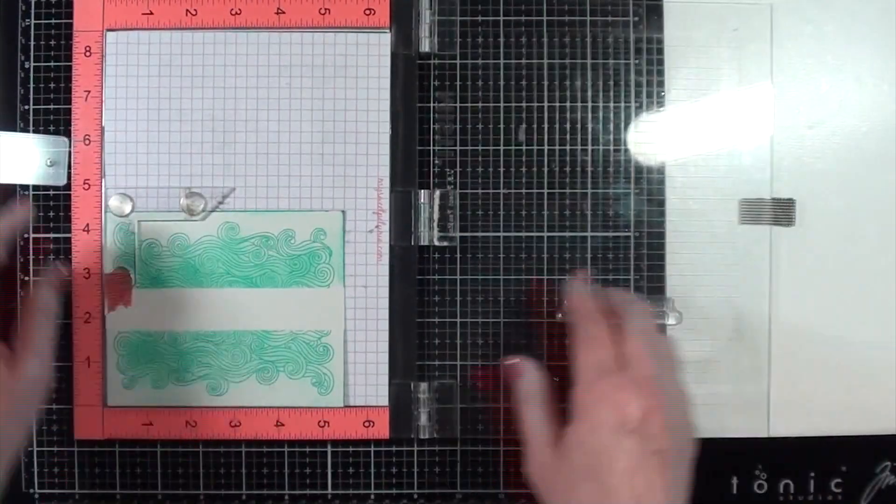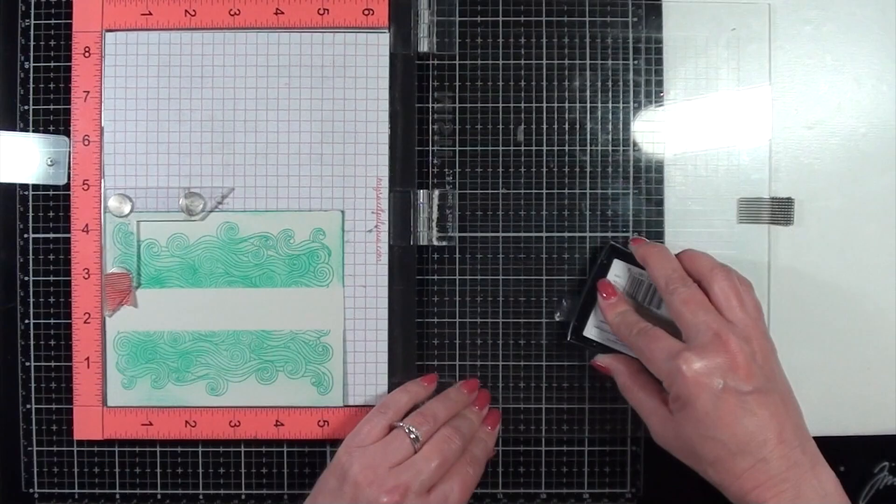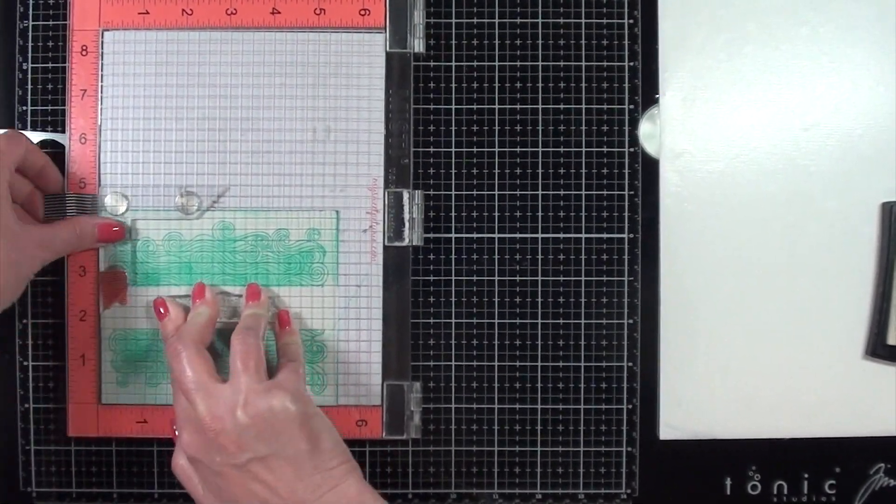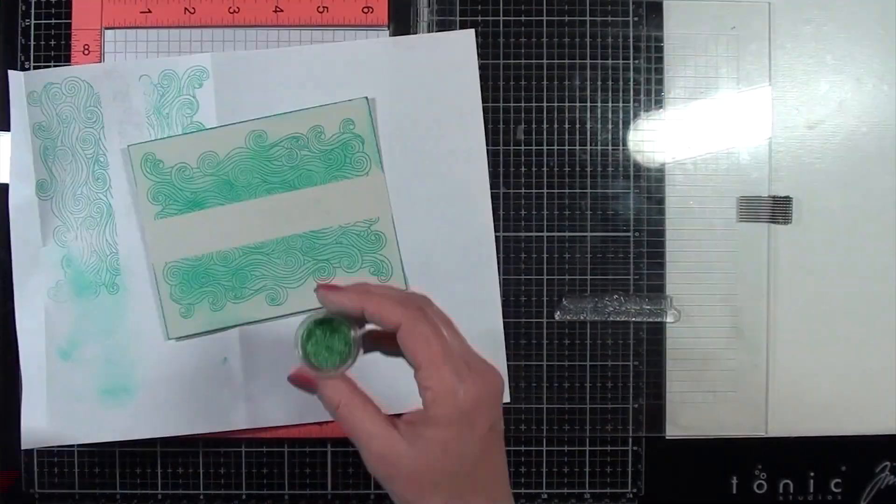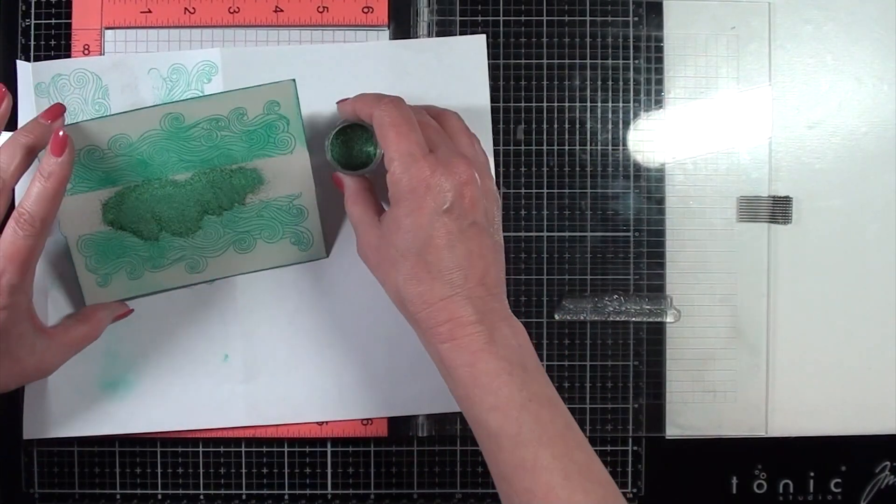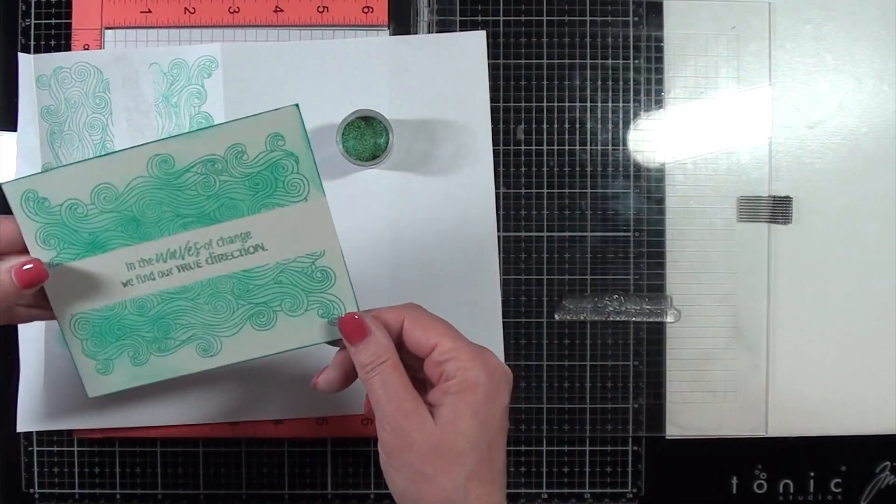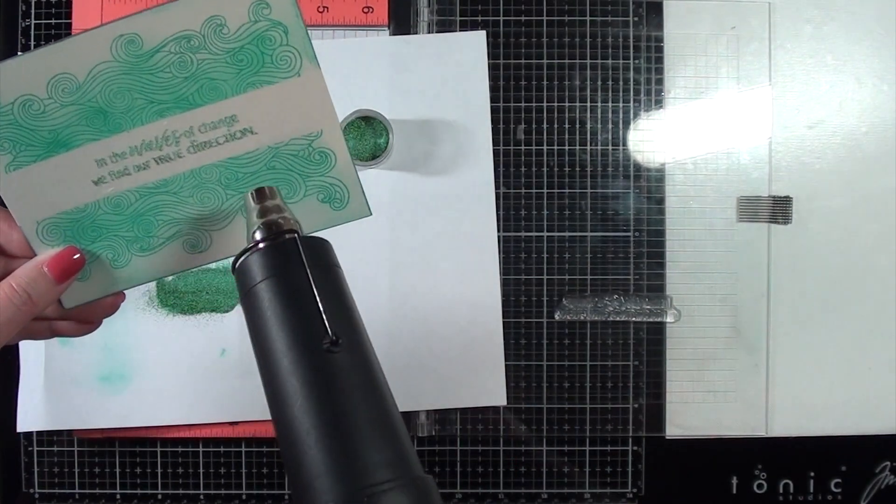And now I'm stamping the sentiment in the center of my card panel. And this time I'm using Versamark ink because I'm going to use embossing powder on the sentiment. And I chose to use a really interesting embossing powder. It's by Wow. And as you can see, it's got a lot of different shades of greens in it. It's called Verdigris, by the way.